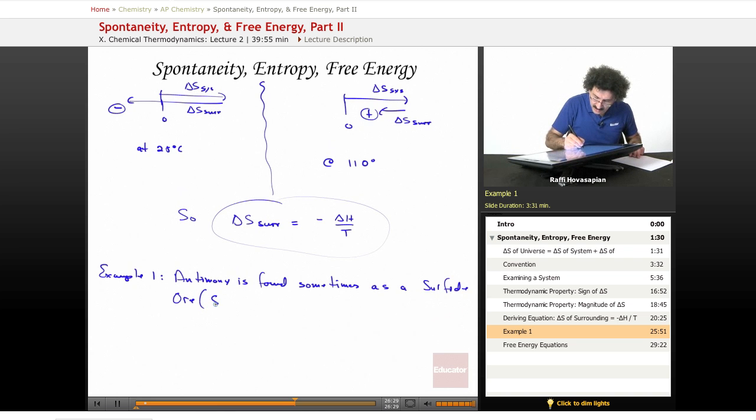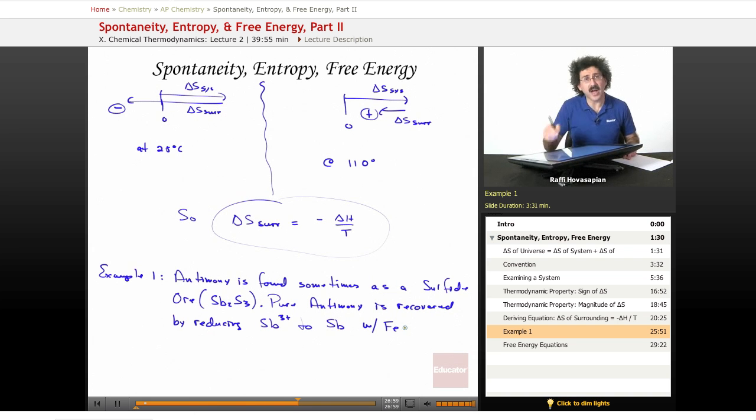It is Sb2S3. Now, pure antimony is recovered by reducing the antimony ion in this ore to pure antimony metal with iron metal. We use iron to reduce it.